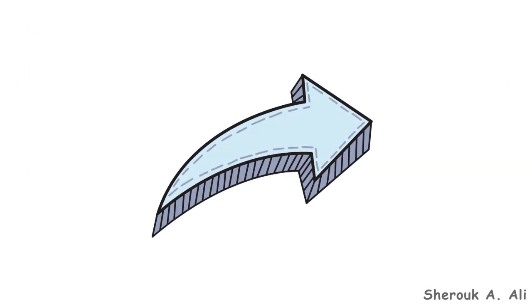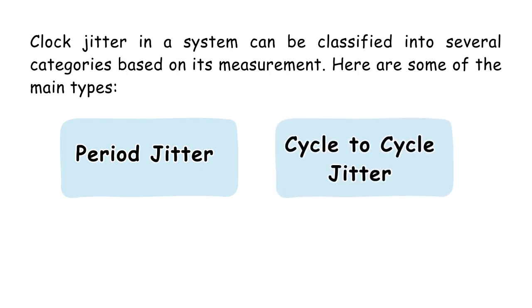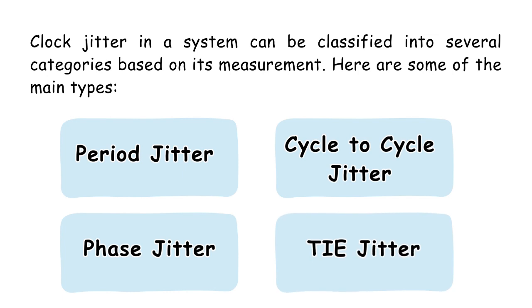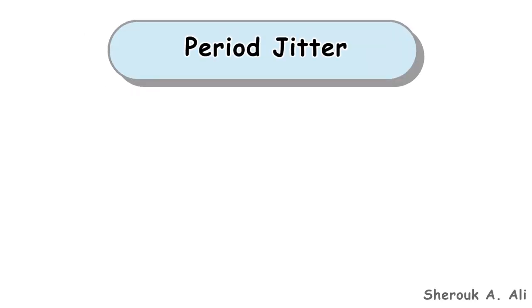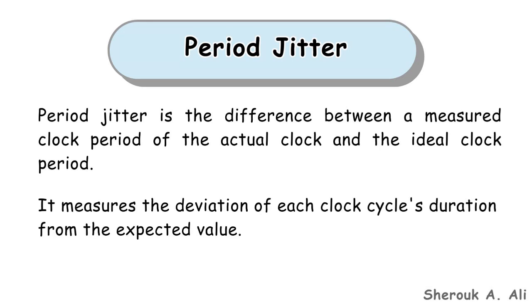Let's see another classification of clock jitter. Clock jitter in a system can be classified into several categories based on its measurement. The main types are: period jitter, cycle-to-cycle jitter, phase jitter, and TIE jitter. Period jitter is the difference between the measured clock period of the actual clock and the ideal clock period. It measures the deviation of each clock cycle's duration from the expected value.